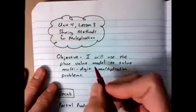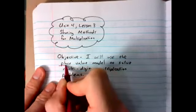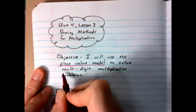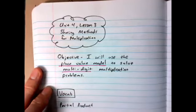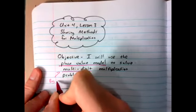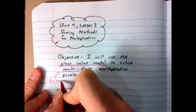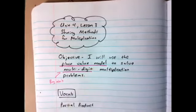Our objective: I will use the place value model. It sounds important. To solve multi-digit multiplication problems.